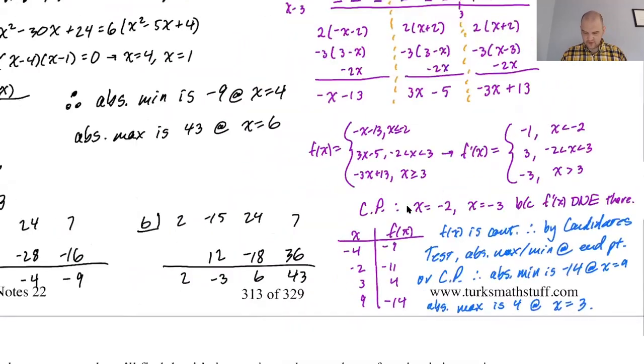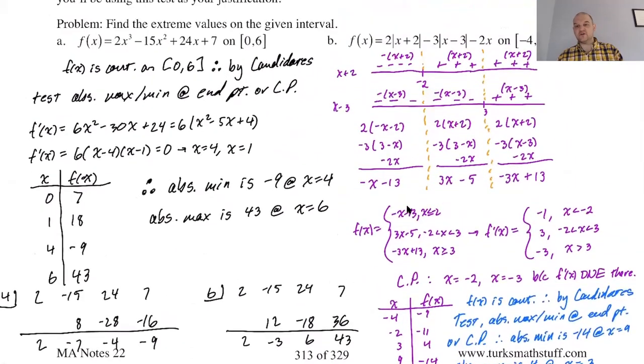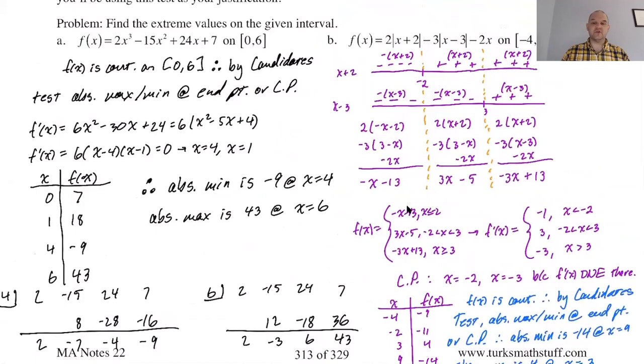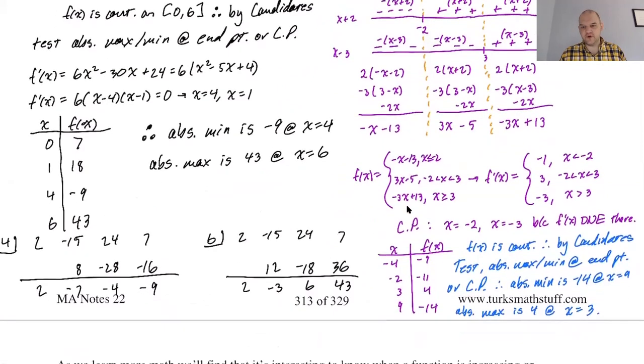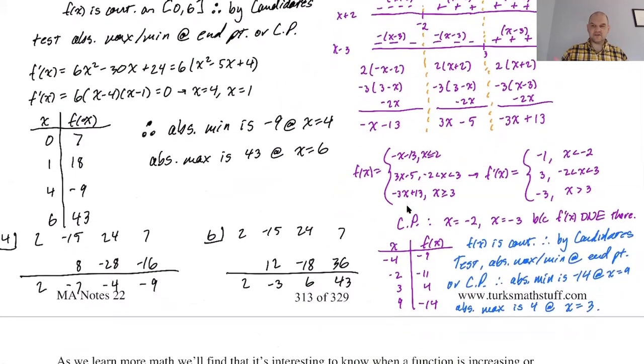So this is another example where one of them occurred at an endpoint, one of them occurred at a critical point. It could be that both of them are critical points, both of them are at endpoints. We just don't know. That's why we go through the process. You're always going to start off by saying the function is continuous. Therefore, by the candidate's test, the absolute max or min occurs at an endpoint or critical point. Then you go hunting for your critical points.